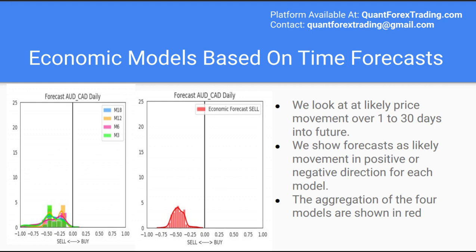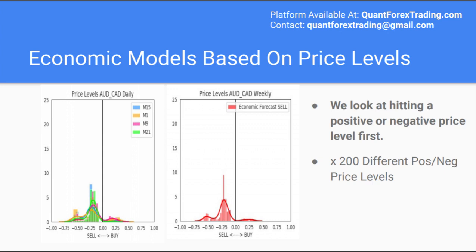We look at economic forecasting models based on future price trends over different time periods into the future. The QuantForextrading platform currently maintains four different economic news model types, shown on the chart as M3, M6, M12, and M18. Each model type corresponds to a set of machine learning models with different feature sets, allowing economic news data to be modeled in different ways to help diversify the variety of forecasting models available. A separate machine learning model is trained for a given future timeframe and specific news release. The aggregation of every prediction is shown to the right in red, generally indicating a sell bias position. A variation in the approach looks at the likelihood of hitting a given positive or negative price level first, and again the aggregation of these four economic news types is shown in red to the right. In this situation, our two economic forecasts agree.